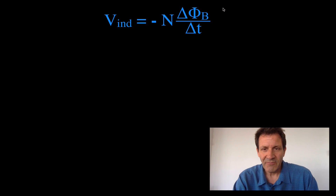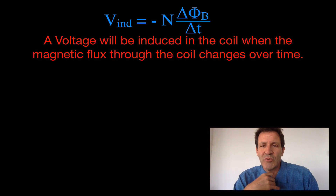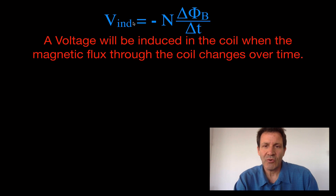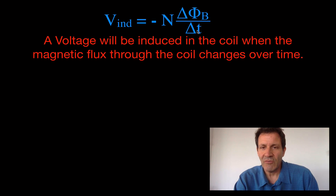So what does all of this mean? Basically, what all of this means is that a voltage will be induced in a coil of wire when the magnetic flux changes over time. So we need a change in the magnetic flux — not just a magnetic flux, but a change in the magnetic flux over time. That is Faraday's Law in equations, and then there in words.